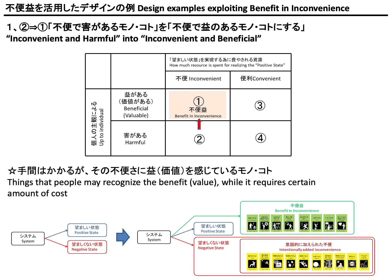I am going to explain about the first design examples, exploiting benefit in inconvenience. This is the strategy to move things belonging to Region 2, harmful and inconvenient, to Region 1, beneficial and inconvenient. What you need to do to achieve this shift of region is firstly, you should imagine things that are recognized as beneficial while they require a certain amount of cost.